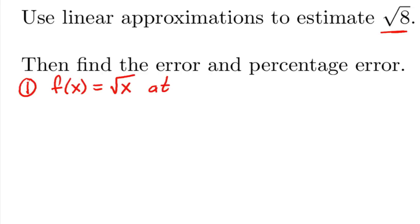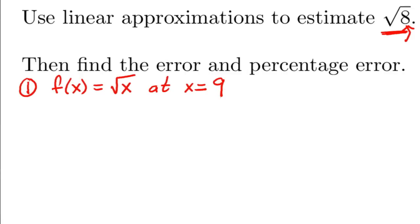And remember that if you're not given a point, you have to choose one. And so the idea is that you try to get as close to the value inside as possible, making sure that it's a value that you know how to find. So, for example, for square root, near 8 that you can find is x equals 9.